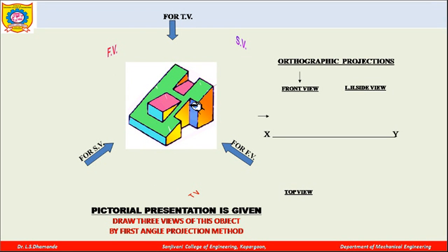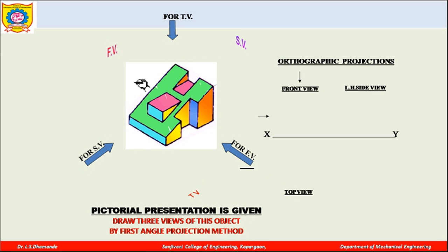Now we will see this particular object. We are also asked to draw the three views of this object using the first angle method of projection. Let us decide we are going to draw the front view from this direction, the top view looking from the top, and this is the direction of viewing for the side view.